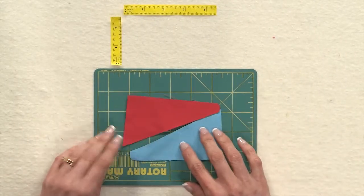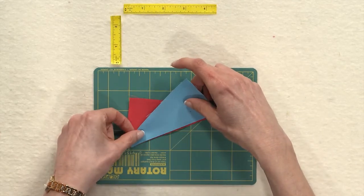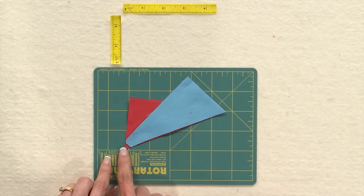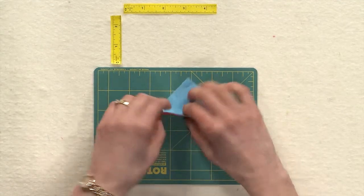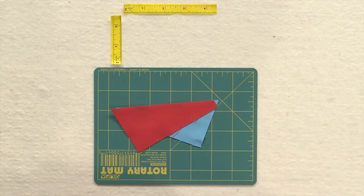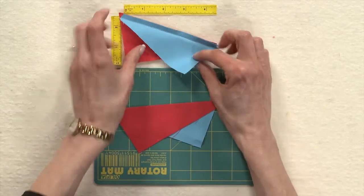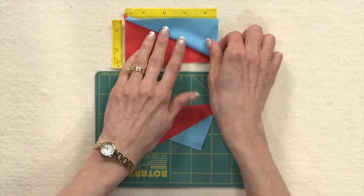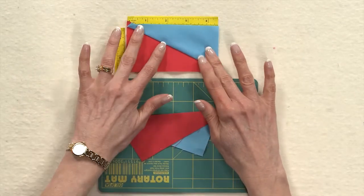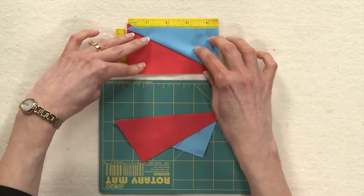Now when I take the two triangles and line them up you can see how well that point fits in this side. I'll flip it over and it fits exactly into this side. And then when I sew the two patches together and open them up now my unit is exactly two and a half inches by four and a half inches.